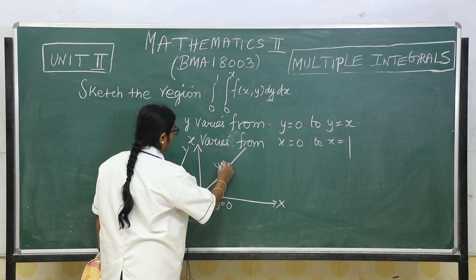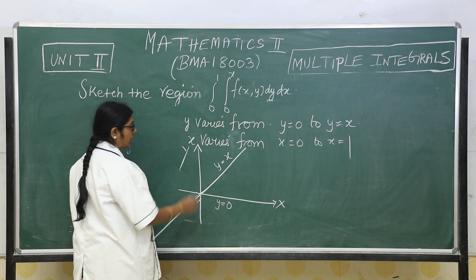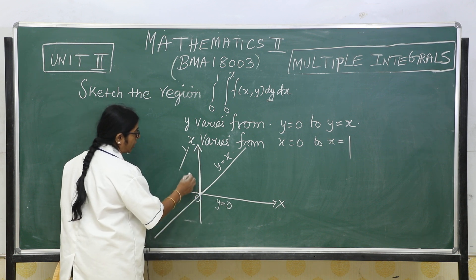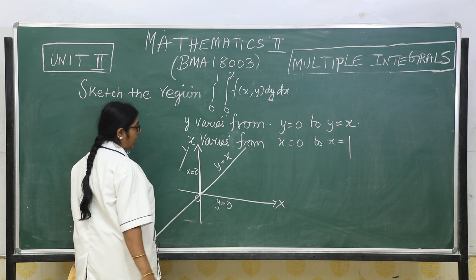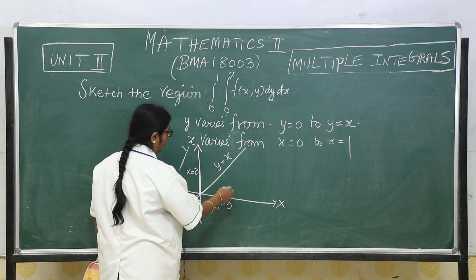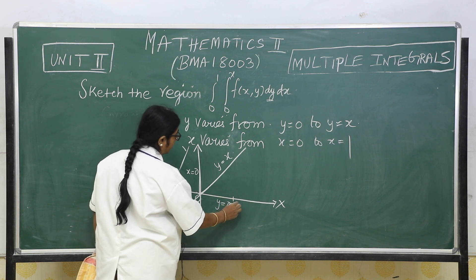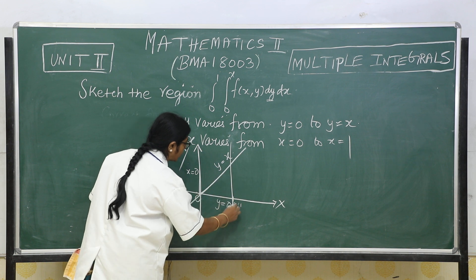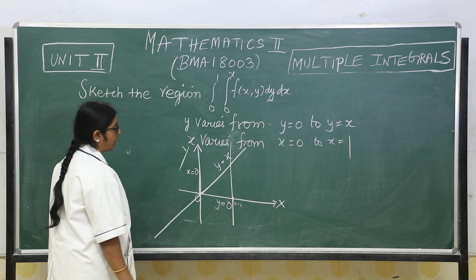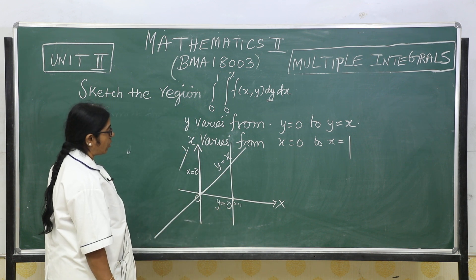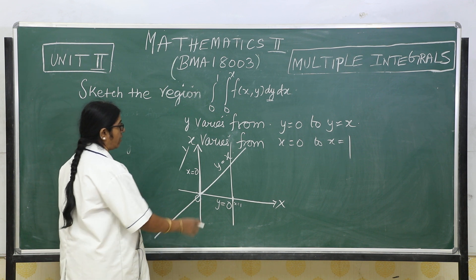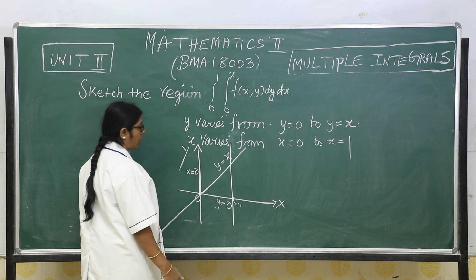And what is x equal to 0? x equal to 0 is the y axis and x equal to 1, say this is x equal to 1, is the line which is passing through x equal to 1 which is nothing but parallel to your y axis.